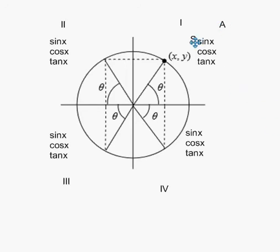and then you, just like we labeled the quadrants, we go counterclockwise. All students take calculus. So the all students take calculus allows you to label this quadrant A, this one S, this one T, and this one C.